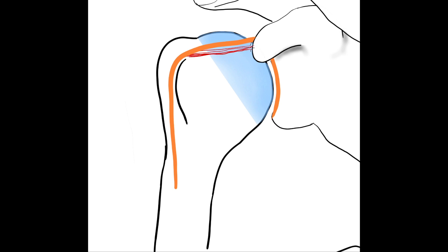The superior glenohumeral ligament originates in the anterior and superior region of the glenoid labrum and inserts into the floor of the bicipital groove. The middle glenohumeral ligament originates from the superior labrum and inserts into the edge of the articular surface of the humeral head.